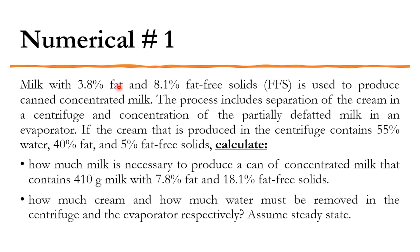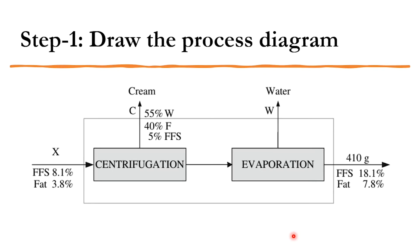There are now three components: fat, fat-free solids, and water. The cream produced in the centrifuge contains 55% water, 40% fat, and 5% fat-free solids. You are required to calculate: (1) how much milk is necessary to produce a can of concentrated milk containing 410 g with 7.8% fat and 18.1% fat-free solids; (2) how much cream and water must be removed in the centrifuge and evaporator respectively. Assume steady state.